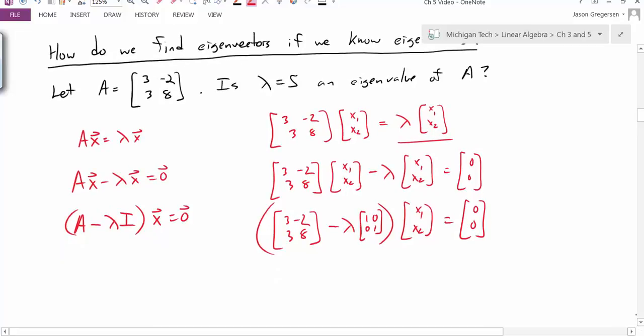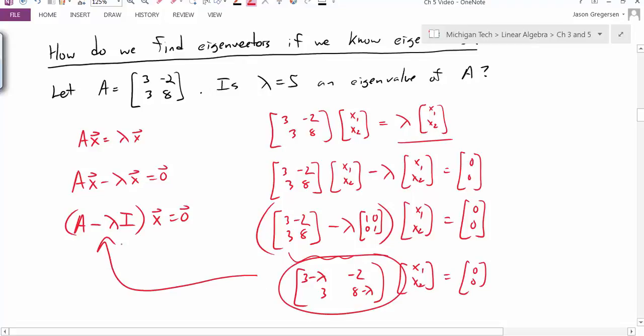Now if I simplify this expression, if I take lambda times identity, it's really just a matrix whose diagonal entries are that eigenvalue. And if I subtract these two matrices, because I only have numerical values on the diagonal, the result would look like my matrix with lambdas subtracted on the diagonals. So I would just be left with a matrix that looks like this.